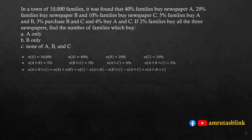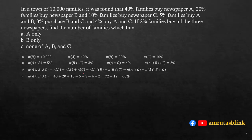Using the formula N(A∪B∪C) = N(A)+N(B)+N(C) - N(A∩B) - N(B∩C) - N(A∩C) + N(A∩B∩C), we get 40+20+10-5-3-4+2 = 60%. So 60% of families buy at least one newspaper.